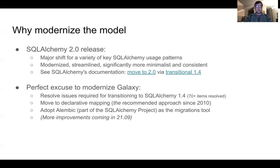These improvements so far include resolving the issues required for upgrading to SQLAlchemy 1.4, which is a transitional version, redefining the model using declarative mapping, which has been the recommended approach since 2010, and switching to Alembic, a database migrations tool which is part of the SQLAlchemy project. Through these improvements, we expect to have a cleaner, more efficient, and reliable data model.